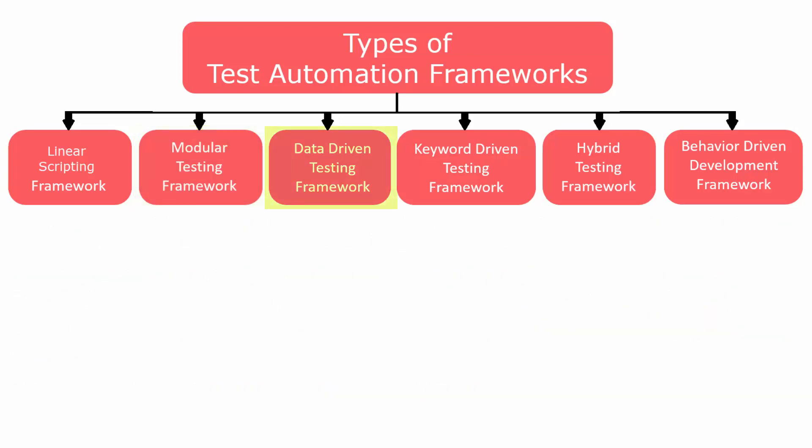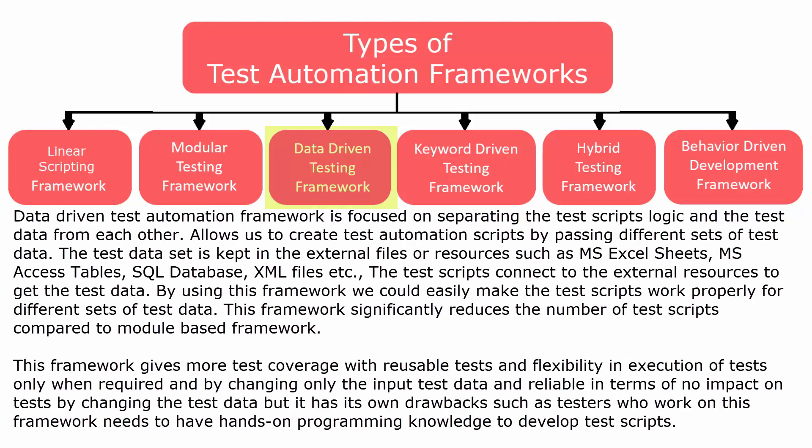The data-driven test automation framework is focused on separating the test script logic and the test data from each other. It allows us to create automation scripts by passing different sets of test data. The test data is kept in external files or resources such as MS Excel sheets, MS Access tables, SQL databases, XML files, etc. The test scripts connect to these external resources to get the test data. This significantly reduces the number of test scripts compared to the module-based framework.